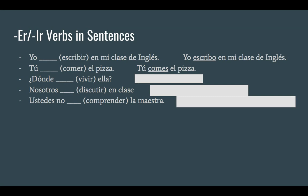We're going to do 'vivir' in the ella form. This is where it gets a bit confusing sometimes, because ella comes after the verb. But there will always be some context clue during conjugation, so just look for that. We take vivir minus the IR and get 'vive'. ¿Dónde vive ella? — Where does she live?